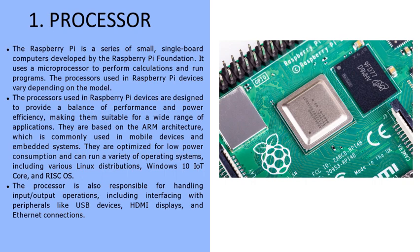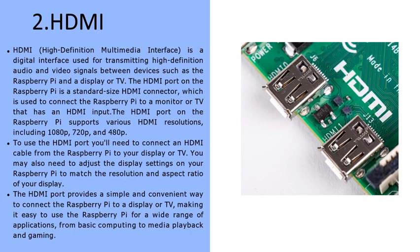The processor is also responsible for handling input/output operations, including interfacing with peripherals like USB devices, HDMI displays, and ethernet connections. The second part is HDMI — High Definition Multimedia Interface — a digital interface used for transmitting high-definition audio and video signals between devices such as the Raspberry Pi and a display or TV. The HDMI port on the Raspberry Pi supports various resolutions including 1080p, 720p, and 480p.